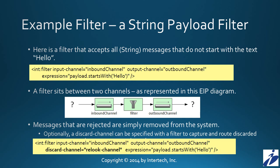Here we see a simple filter that looks at messages expecting a String payload, using an expression to determine which messages are accepted and which are rejected — in this case, checking if the string in the payload starts with the word 'hello'. A filter sits between two channels: the input channel being the inbound channel and the output channel being the outbound channel. Messages that are rejected are simply removed from the Spring Integration system. However, optionally you can also provide a discard channel with your filter to specify a channel to send those rejected messages — in this case, sending them off to the 'relook' channel.